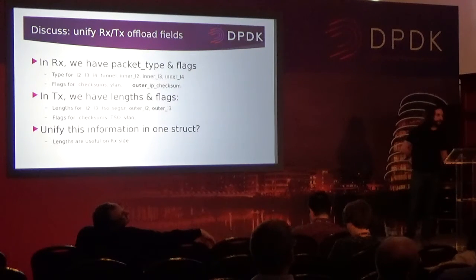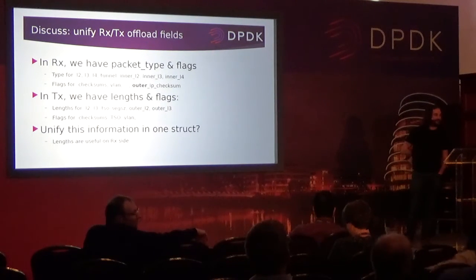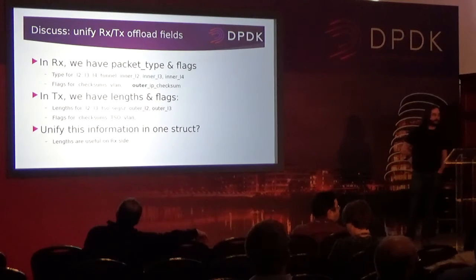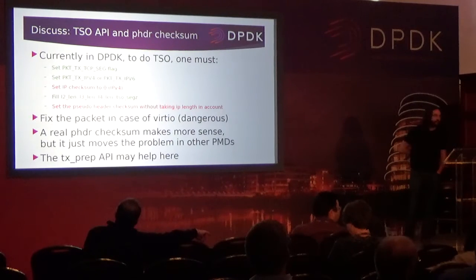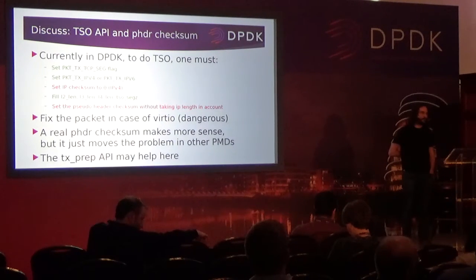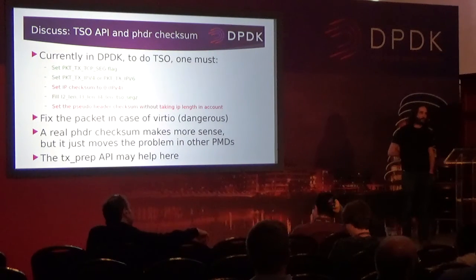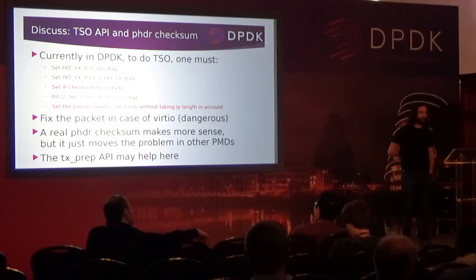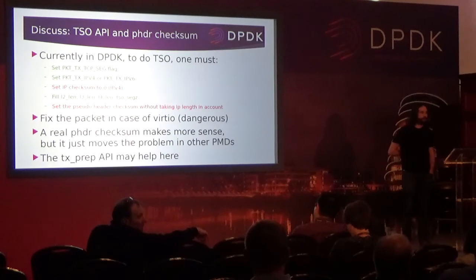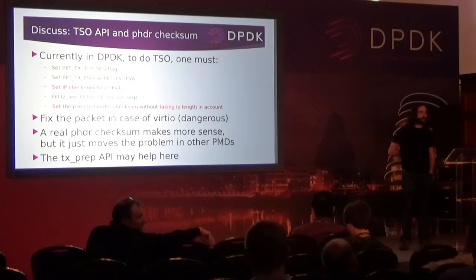One more thing, probably a wrong time to mention: in addition to TX prep, introduce a new function that would do transmission for a bulk of packets where, for each of them, the TX offload flags would be exactly the same. That would speed up applications quite a lot. Basically a new addition to the transmit API. That could be a good idea. Thank you, everyone.